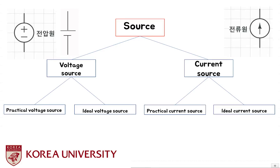In this lecture, we will introduce some basic circuit elements like voltage source and current source. The main question I really want to address is: why is the internal resistance of an ideal current source equal to infinity? And why is the internal resistance of an ideal voltage source equal to zero? If you don't know, keep watching this video.